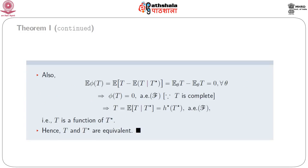Now E[φ(t)] = E(t) − E[E(t | t*)] = E(t) − E(t) = 0 for all θ, using the theorem of conditional expectation. Since t is complete, this implies φ(t) = 0 almost everywhere with respect to script F. This implies t = E(t | t*), which we write as h*(t*). That is, t is a function of t*, and hence t and t* are equivalent.